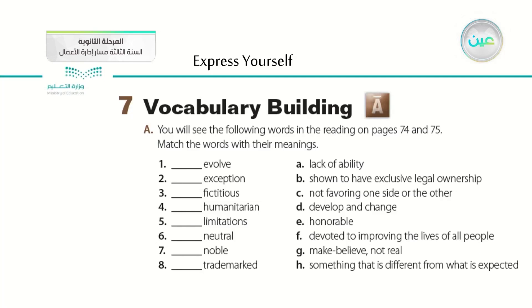We talked about the first word: 'evolve' — the change of something over a period of time. 'Exception' refers to anything different from the other parts. 'Fictitious' means imaginary. 'Humanitarian' means something that aims to develop the lives of people. 'Limitations' are the boundaries or disadvantages of something. 'Neutral' means not favoring any party, being in the middle. 'Noble' means a reputable person. And 'trademarked' is when something belongs exclusively to a company or person.